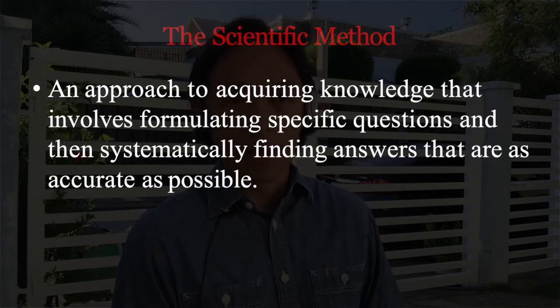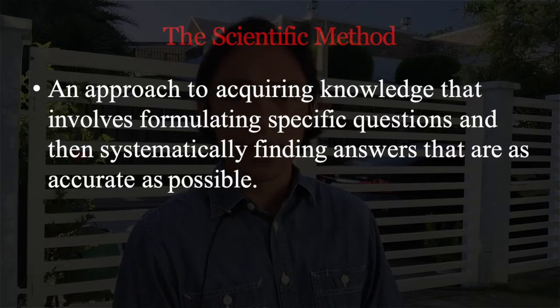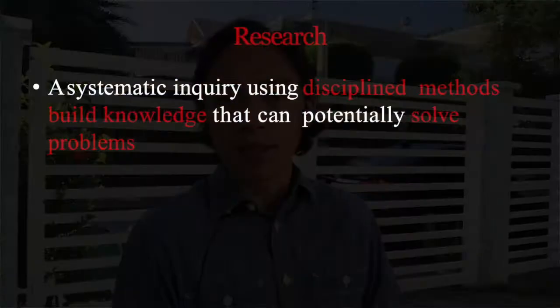The scientific method is an approach to acquiring knowledge that involves formulating specific questions and then systematically finding answers that are as accurate as possible. When we talk about science, there are two aspects: one is that it is a body of knowledge, and the other is that it involves activities for us to arrive at that body of knowledge. And such activity is what we refer to as research.